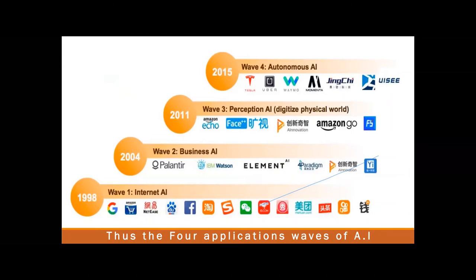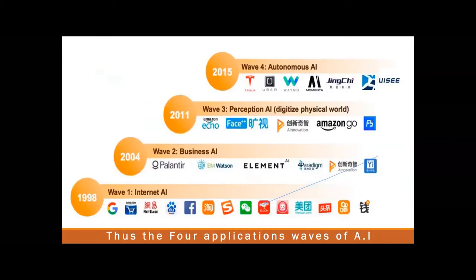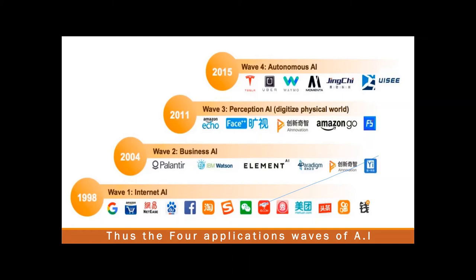Looking at the AI and the 'artificial' and 'intelligence' of AI: the first wave around 1998 was internet AI — Skype, Google, Facebook, Amazon — which gave you search and connectivity-based functionalities. The second wave basically translated into business aspects: AI became part of business decisions, and prediction became very important at that point of time.